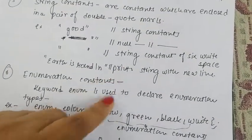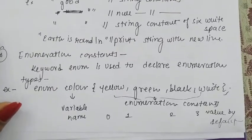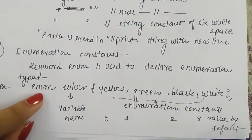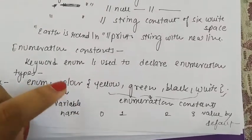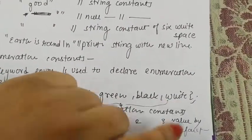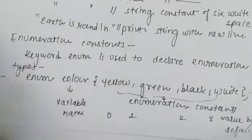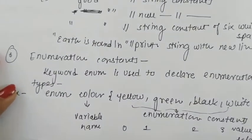Then we have enumeration constants. We define enumeration types using enum, like enum color. Color is your enumeration constant variable which has default values 0, 1, 2, 3. We will discuss this in detail when we discuss data types.